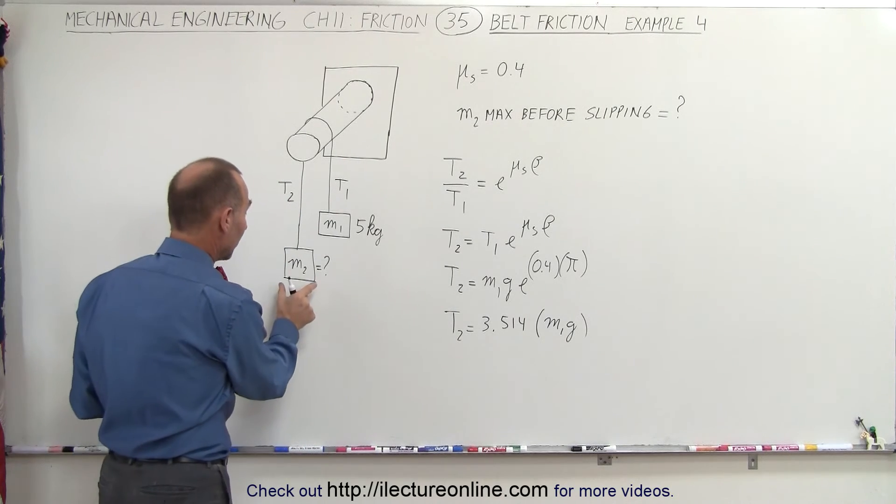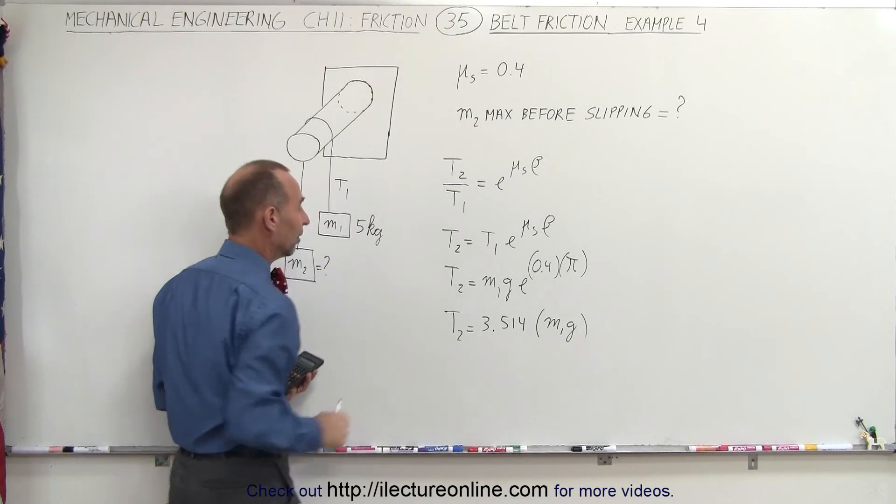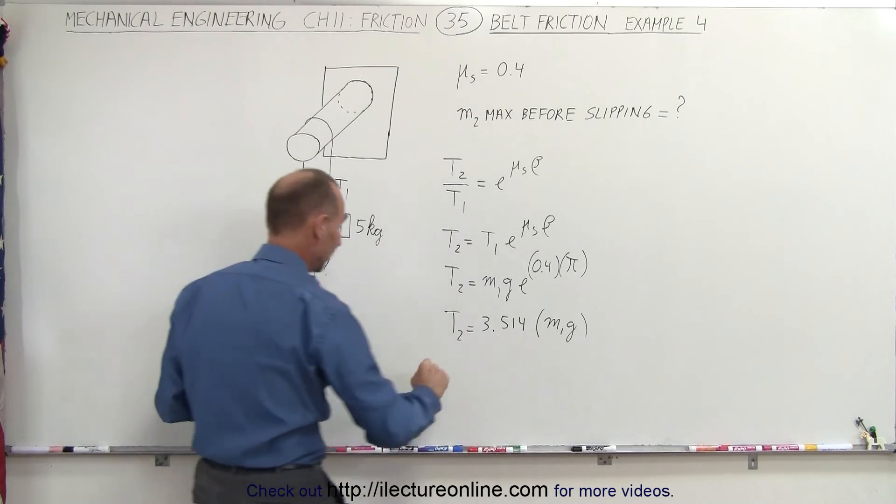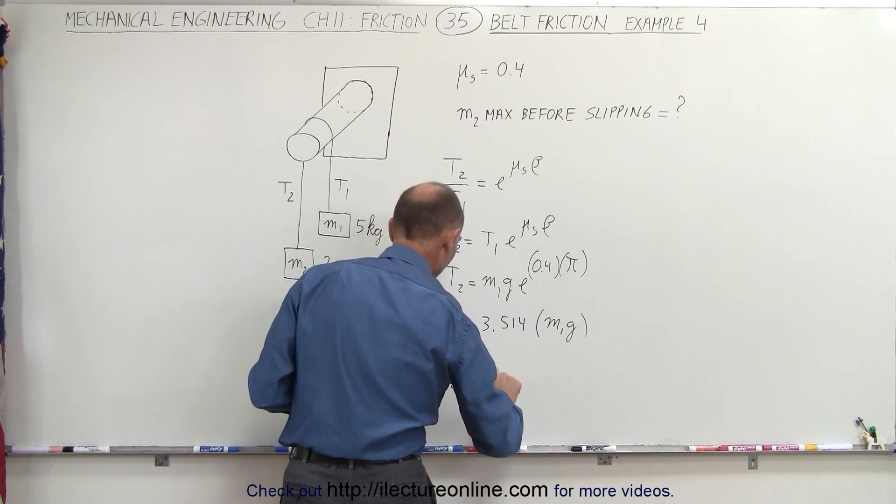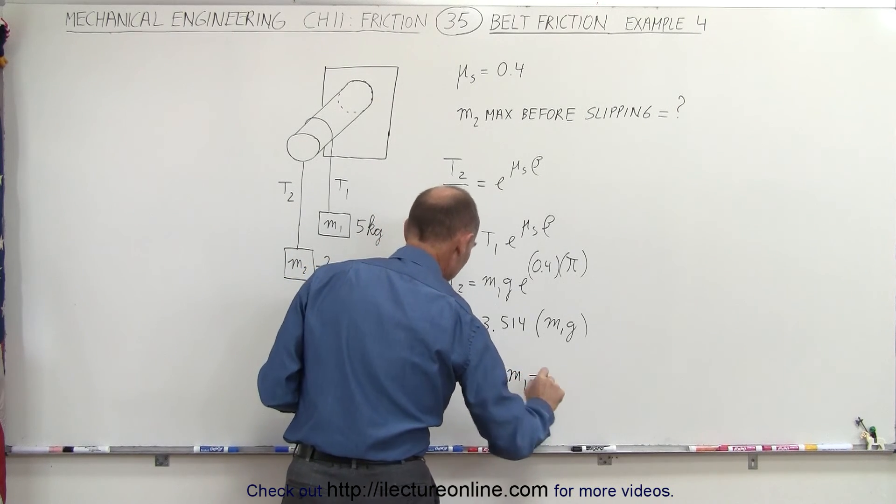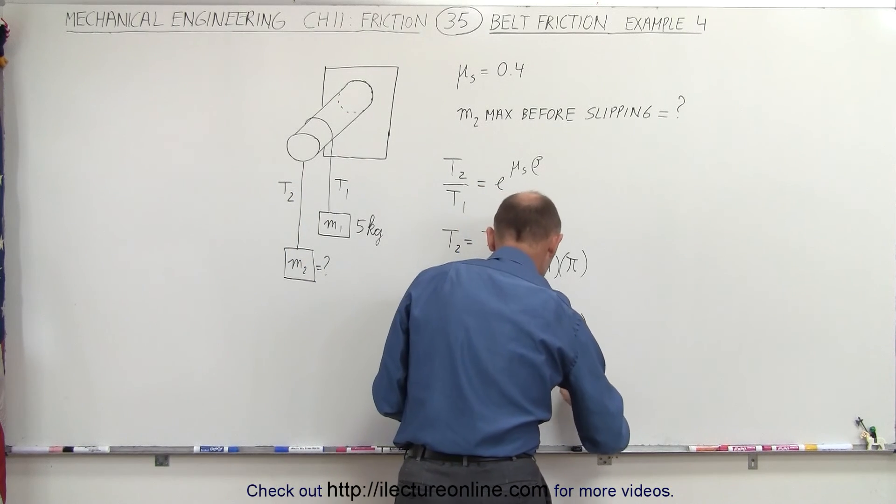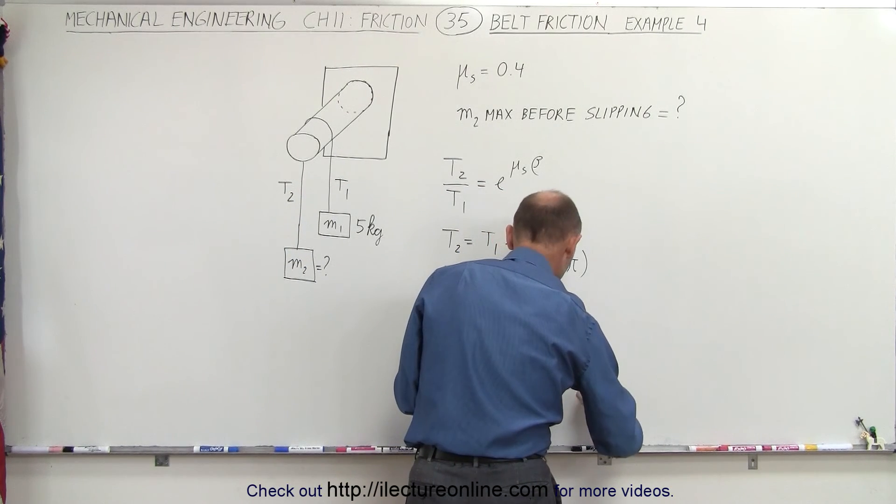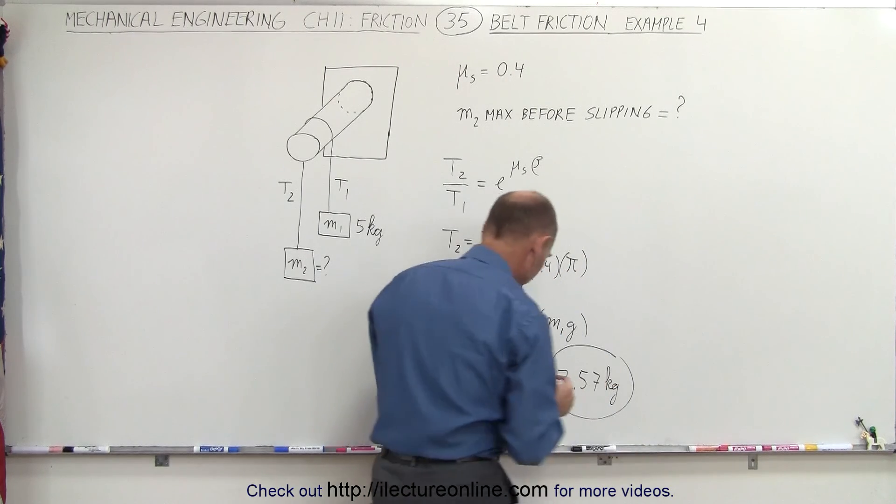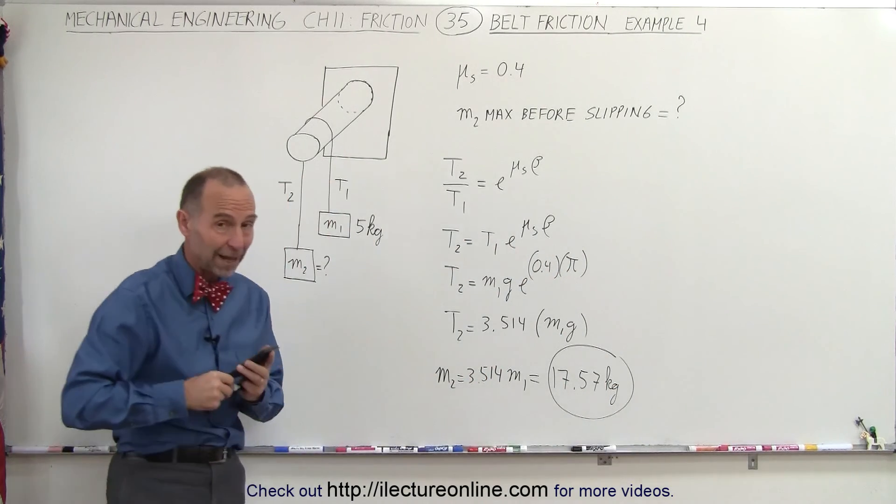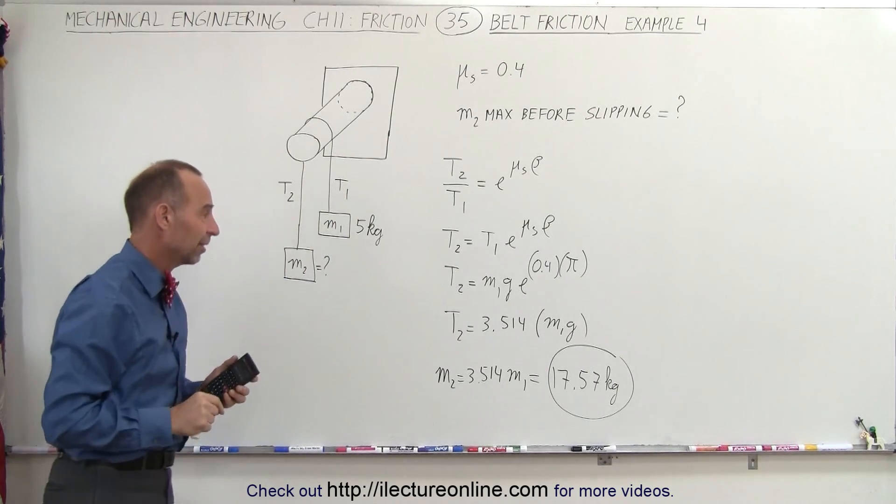So in other words, we can place an object here that has 3.514 times the mass of M1. Therefore, we can say that M2 is equal to 3.514 times M1, so we multiply that times 5, and we get 17.57 kilograms as being the maximum mass that we can place on this side before everything starts slipping.